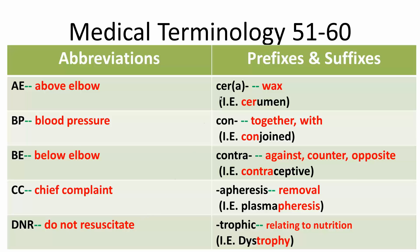And now for the prefixes and suffixes. Ser, sera — that means wax, so cerumen pretty much means earwax. Con means together, with — so conjoined twins. Contra means against, counter, or opposite — so contraceptive.